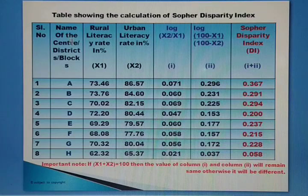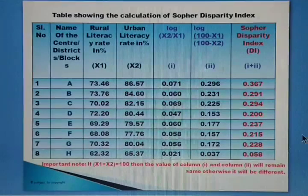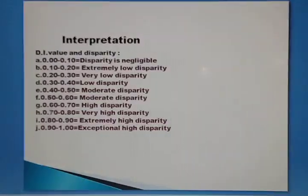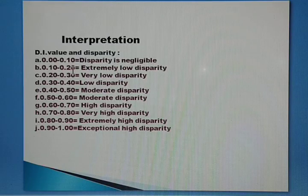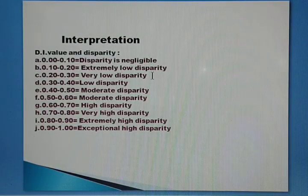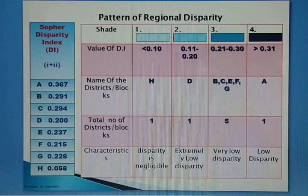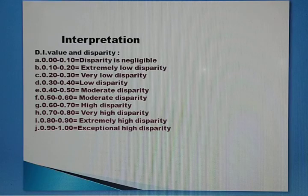In conclusion, among all eight districts the overall disparity is very low. To interpret: District H has negligible disparity; District D has extremely low disparity; Districts B, C, E, F, and G have very low disparity; and District A has low disparity. In this way you can interpret the whole dataset for any given question.